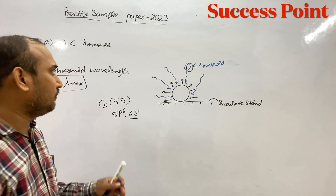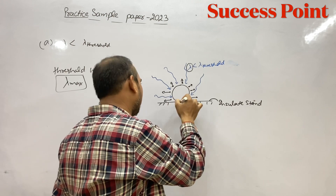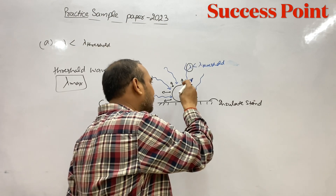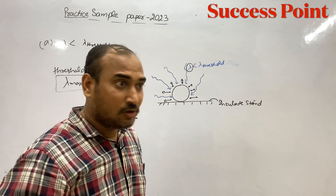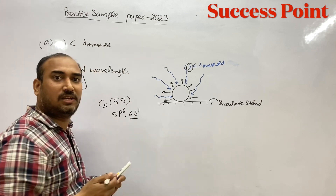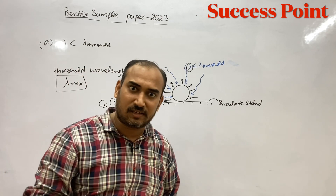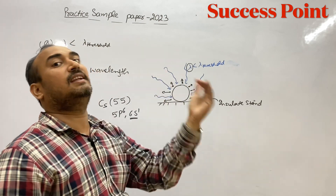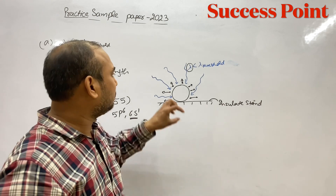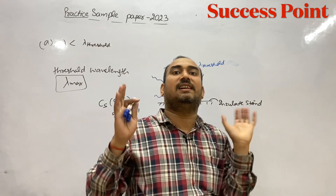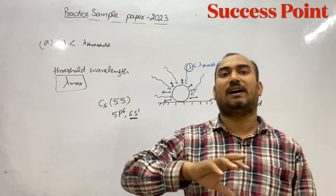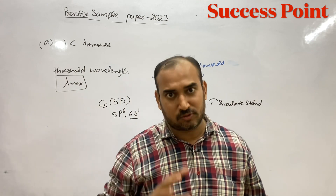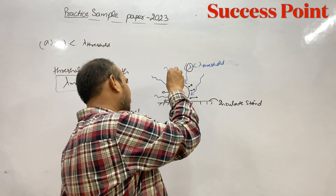अब 1 electron है, तो जब सबके 6S1 वाले जो सारे electrons निकल जाएंगे — यह सारे valence electrons निकल जाएंगे — तो उसके बाद अंदर वाले electrons नहीं निकल पाएंगे। क्योंकि जो अंदर वाले inner electrons होते हैं वो tightly held होते हैं। इसका मतलब photoelectric effect केवल valence shell के electrons के लिए होता है।